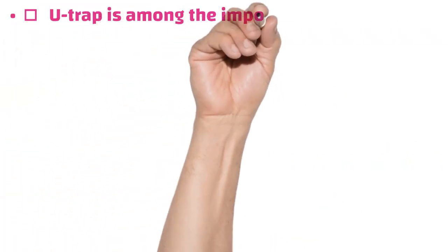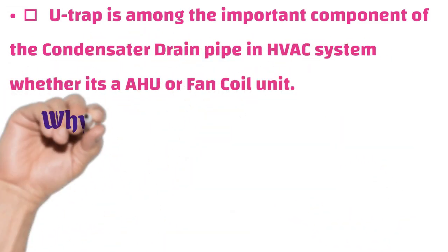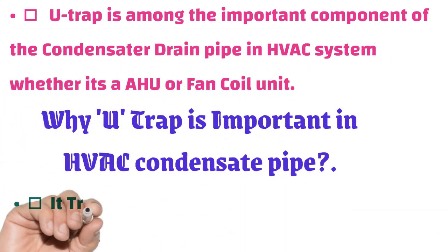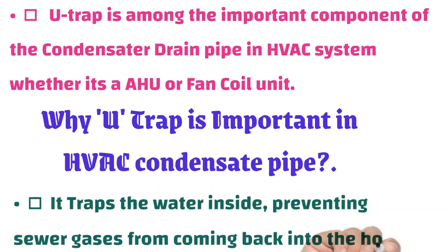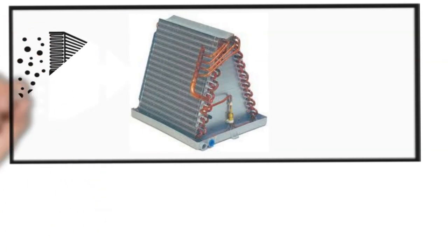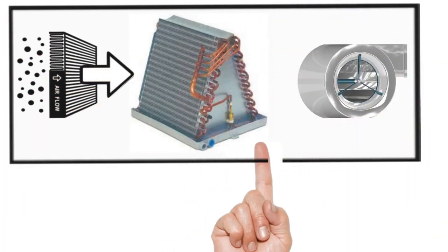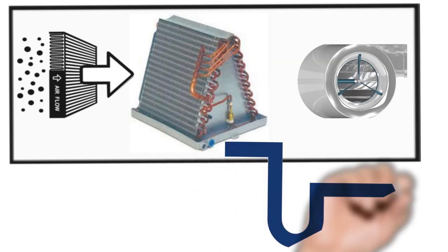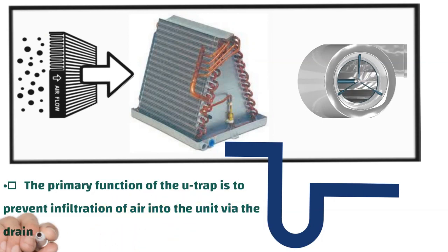The U-trap is among the important components of the condensate drain pipe in an HVAC system, whether it's an AHU or fan coil unit. It traps water inside, preventing sewer gases from coming back into the house. The primary function of the U-trap is to prevent infiltration of air into the unit via the drain line.